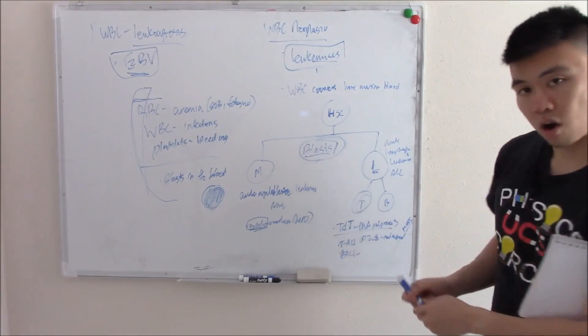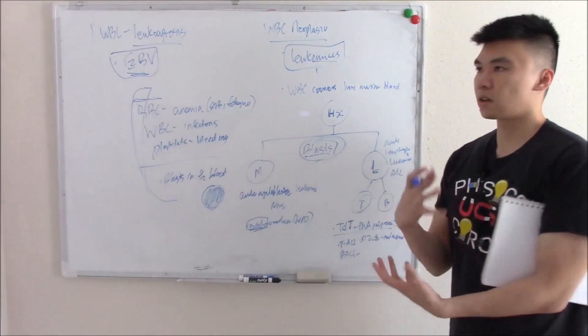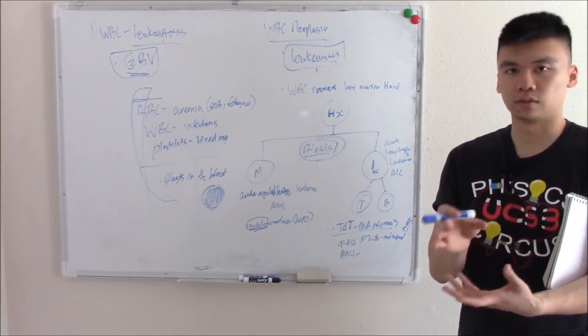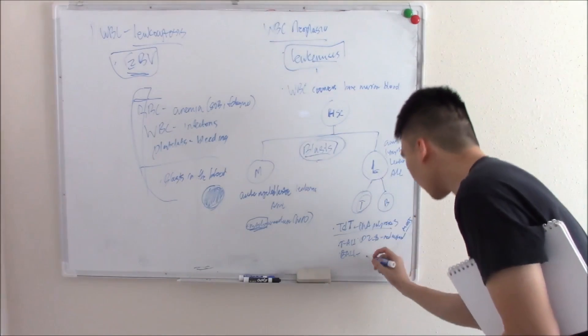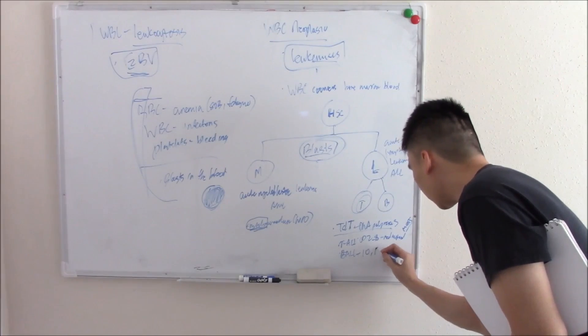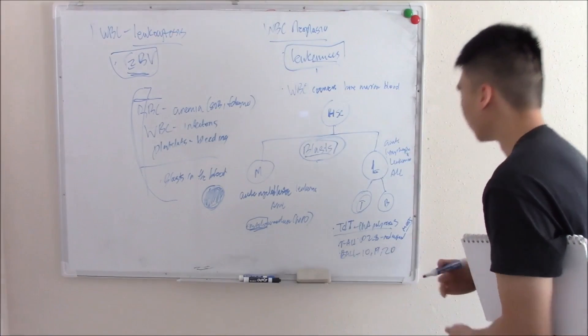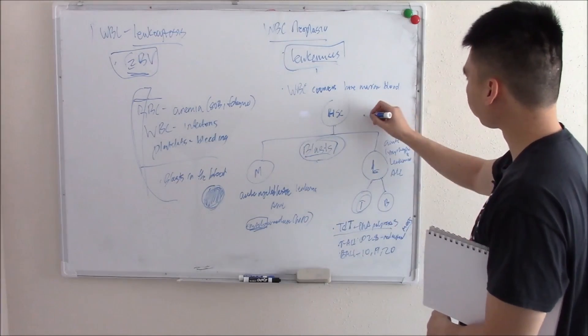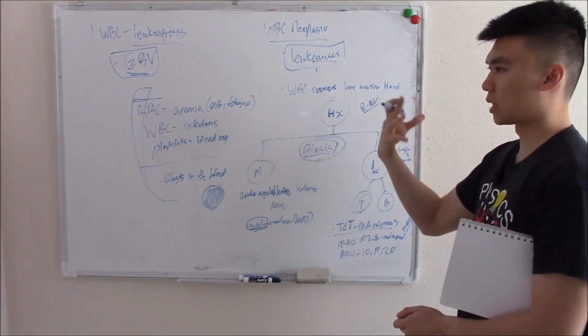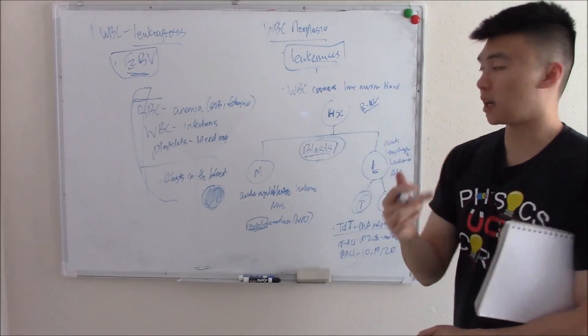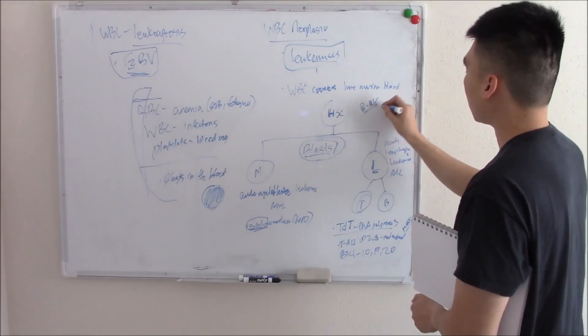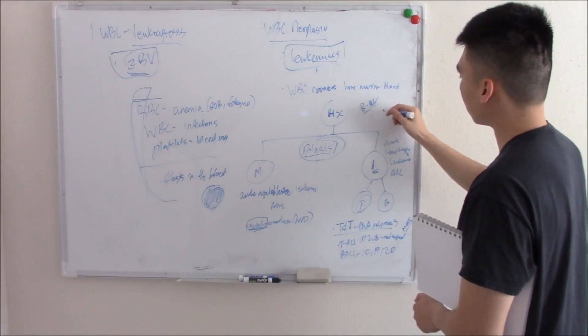Let's move on to B-ALL. B-ALL also has CD markers but not 2, 4, 8. Instead they're things like 10, 19, and 20. Also very important, some of these cancers arise spontaneously and some are related to genetic mutations. B-ALL is related to genetic mutations. You can have a mutation in